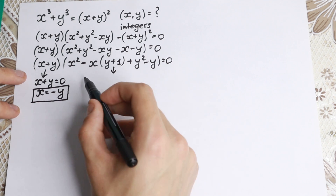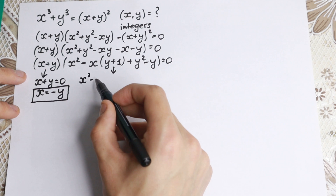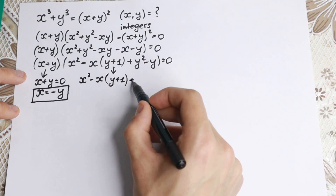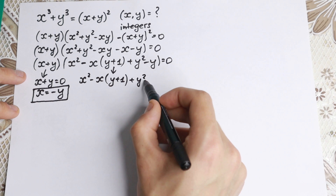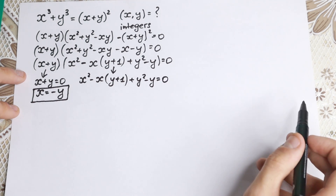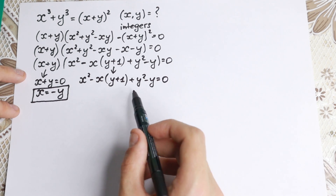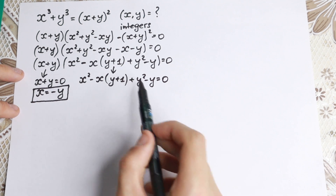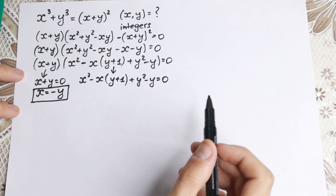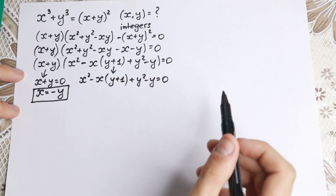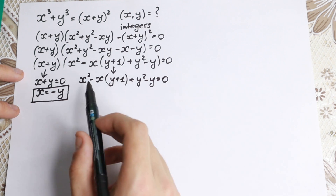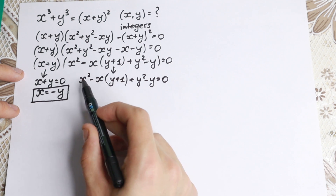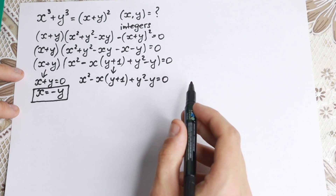So we have x² minus x times (y+1) plus y² minus y equal to 0. What are we going to do with this? Because this is a hard expression — we have y, we have x, we have squares on both variables. But if we look closely, this is a quadratic equation where the main variable is x. Right here we have our x², we have x, and we have some constant.